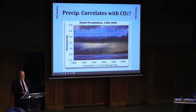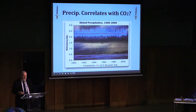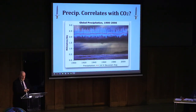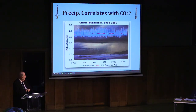This is precipitation. Precipitation is one of the big bugaboos of global warming. This is a hundred-year period. Precipitation: flat. No change in precipitation over a hundred years.